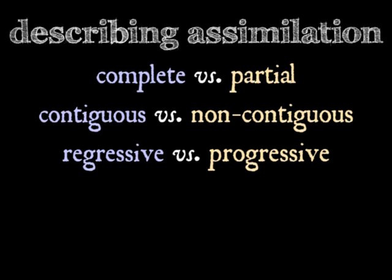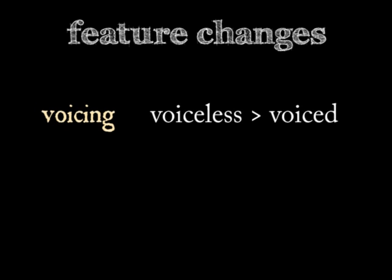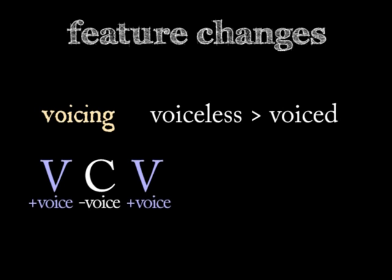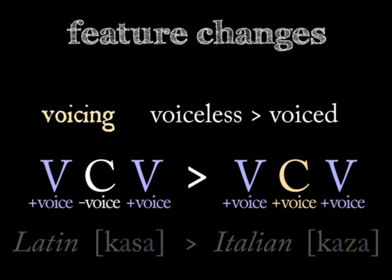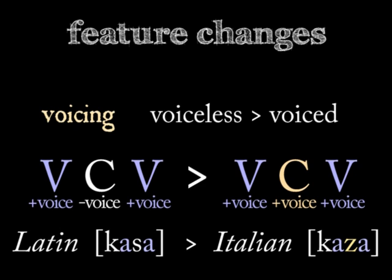We can also label assimilations by the features that are changed in the process. If the assimilating phoneme is originally voiceless and picks up the feature 'voice' from the other sound, this sound change is called voicing. Nearly all vowels in human language are voiced, and consonants often become voiced between vowels. Some Italian speakers pronounce S between two vowels as Z, like in 'la mia casa' — the change from S to Z is an instance of intervocalic voicing.